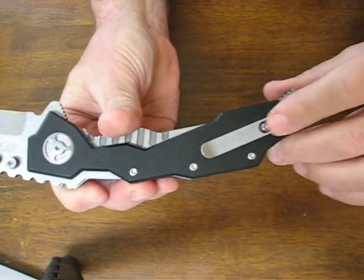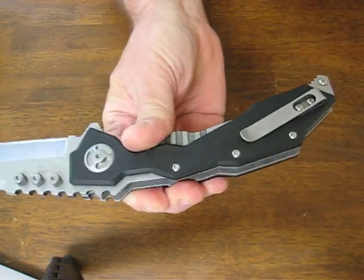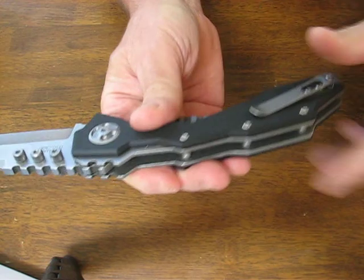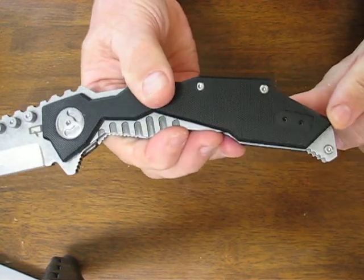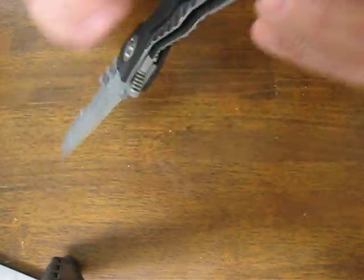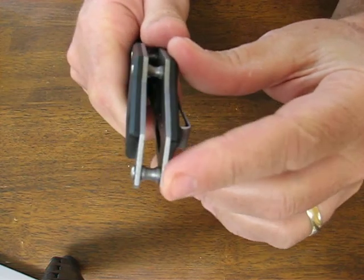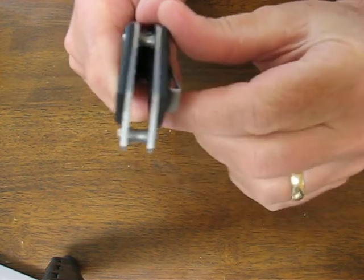There is a pocket clip mounted for right hand tip up carry in the pocket. It is reversible so it is completely ambidextrous. There's no lanyard hole in it but there's a lanyard post so you can attach your lanyard right there.